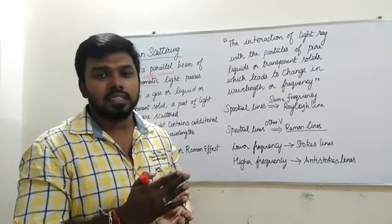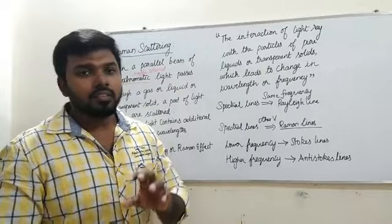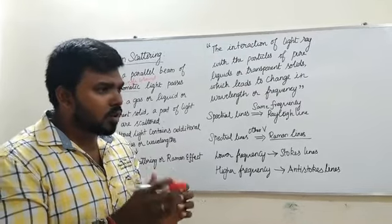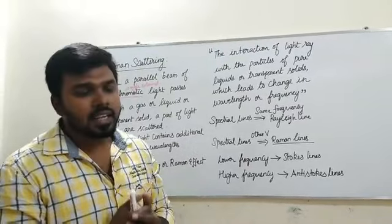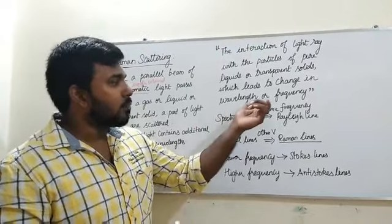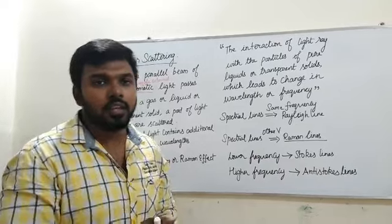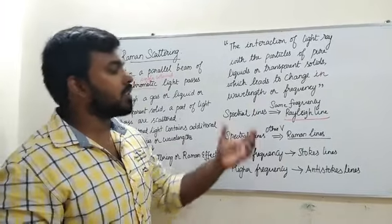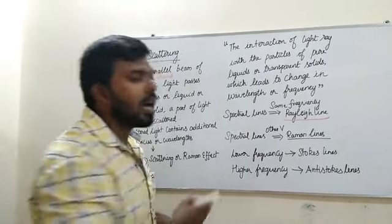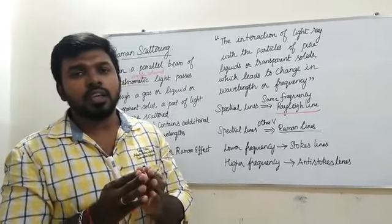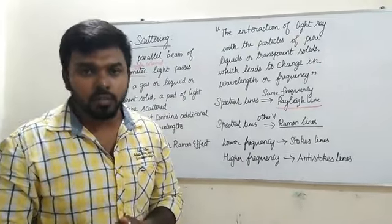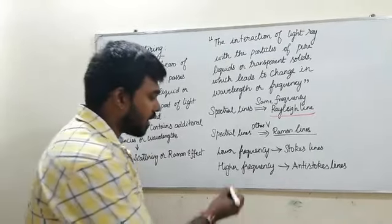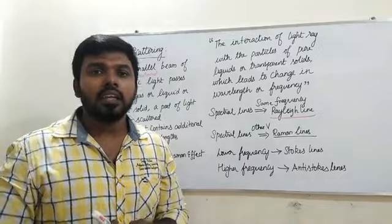After getting scattered, the resulting lines are called spectral lines. When the spectral lines after scattering have the same frequency as the incident frequency, those lines are called Rayleigh lines. If the frequency varies, those are called Raman lines. The frequency can be either higher or lower than the incident frequency. When the frequency is lower, those are called Stokes lines; when the frequency is higher, they are called Anti-Stokes lines.